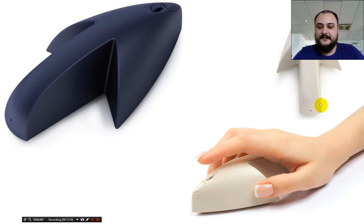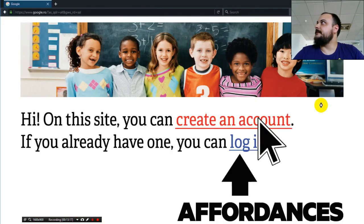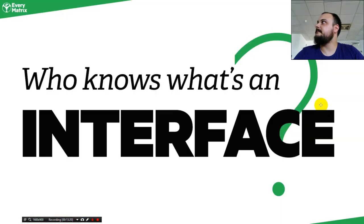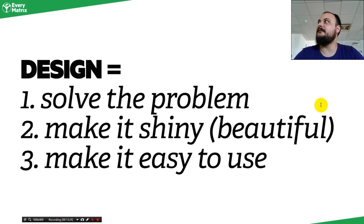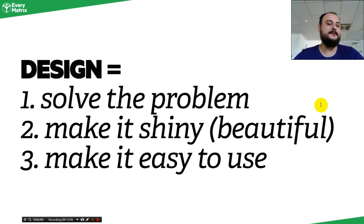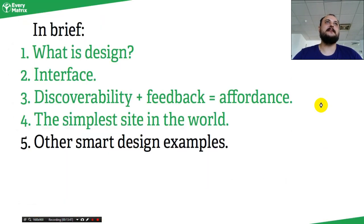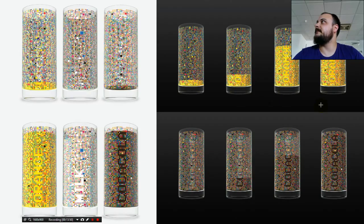Let's go back to the three things mentioned earlier: solving the problem, making it beautiful, and making it easy to use. These are often used to various degrees in any product, object, or interface. That mouse in the shape of a mouse cursor is very beautiful and novel, but probably not that easy to use — though it does solve the problem because it acts and behaves like a mouse.